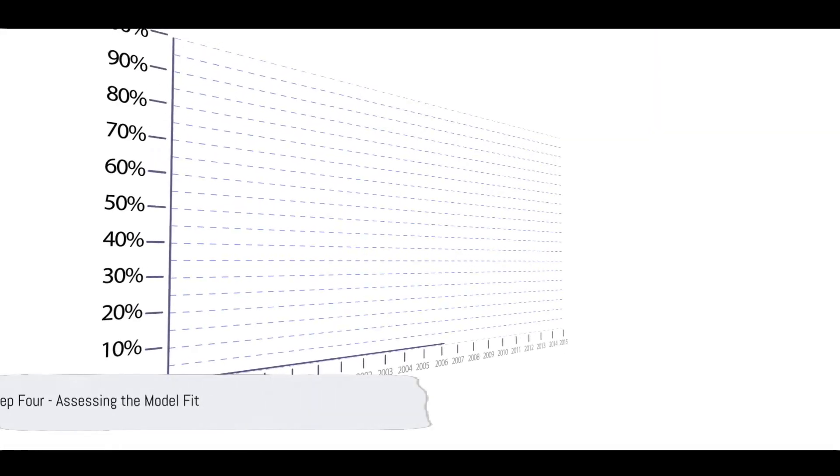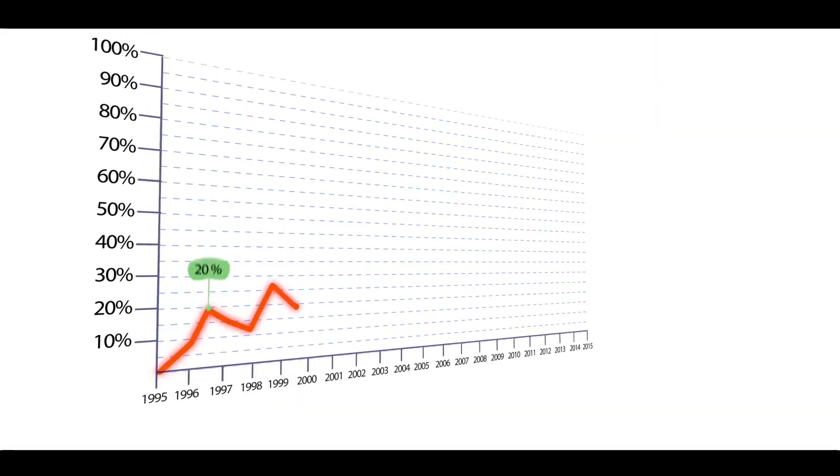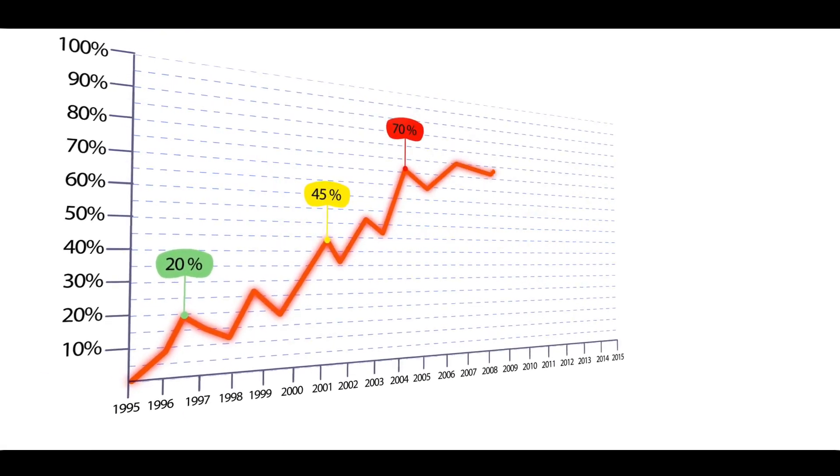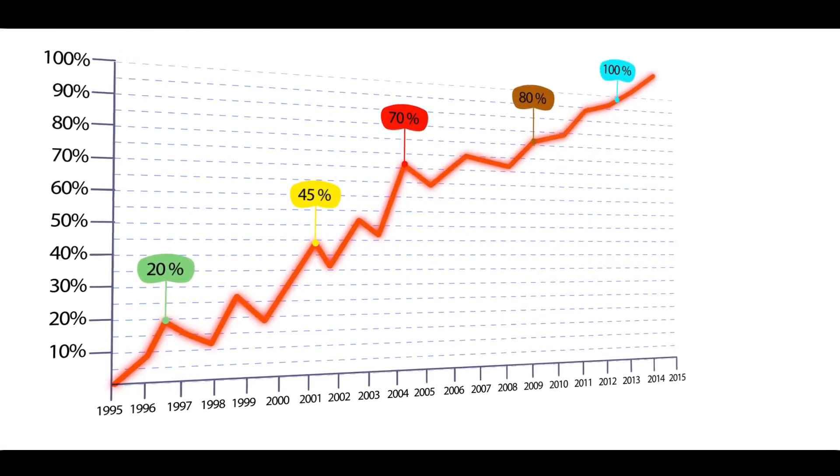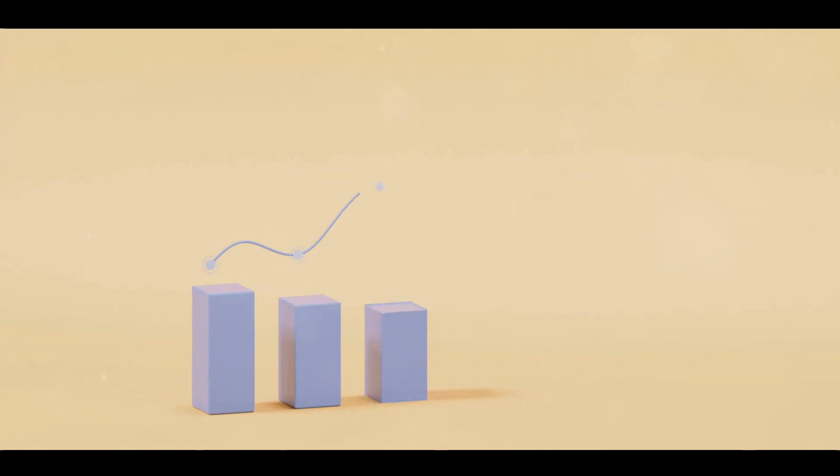Step 4 is assessing the model fit. This is done using statistics such as r-squared, which measures the proportion of the variation in y that is explained by the model. A high r-squared indicates a good fit.